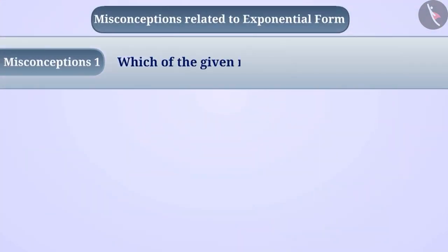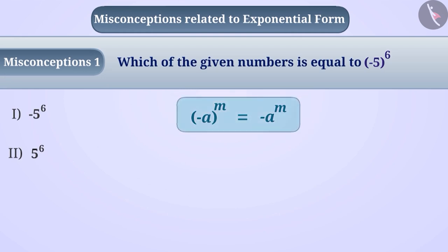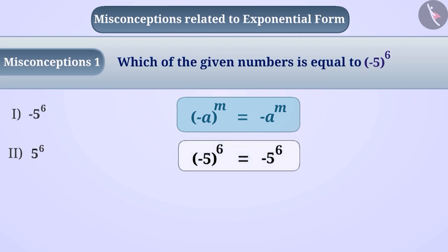Misconception 1: Which of the given numbers is equal to minus 5 raised to the power of 6? Some children do not understand the concept of exponent properly. They believe that if there is a negative sign in the base, it always results in a negative number. So they choose option 1, which happens to be a wrong answer.